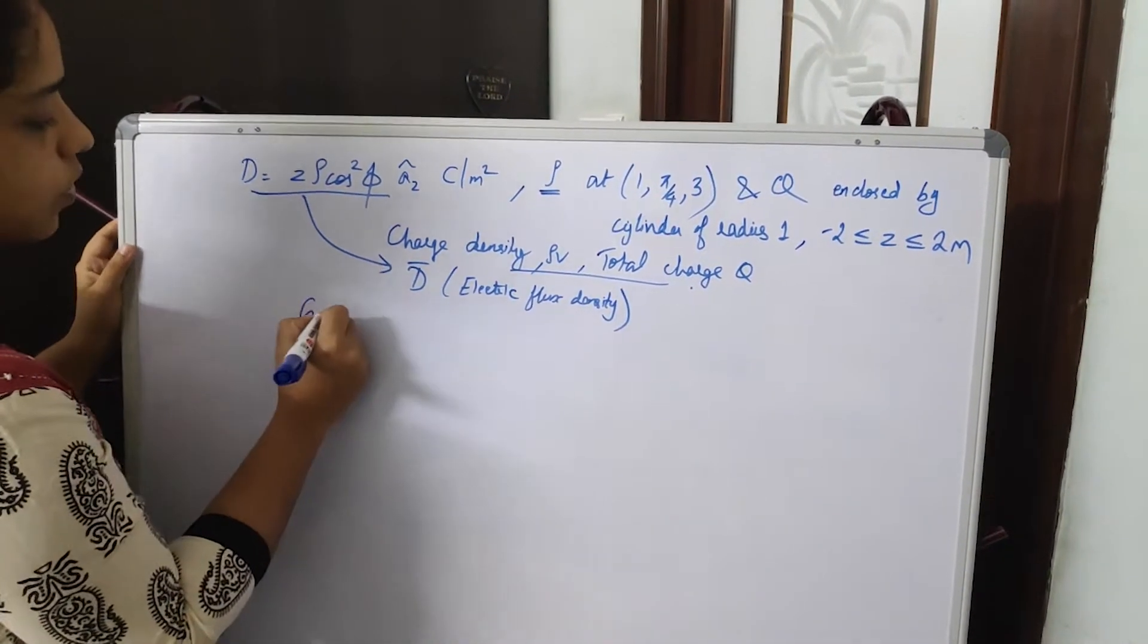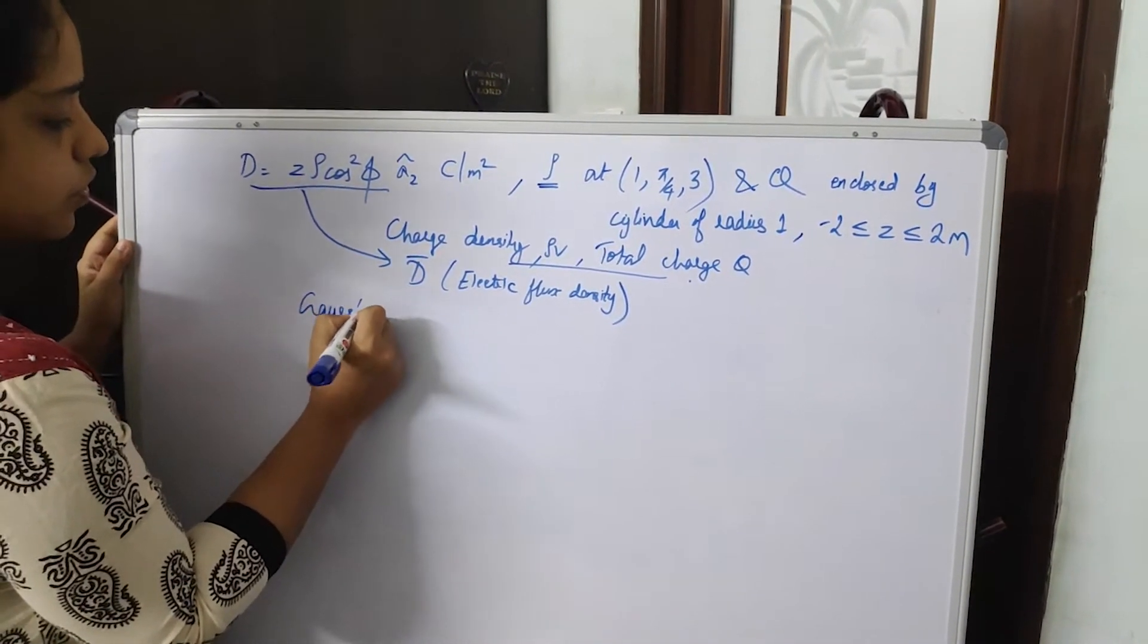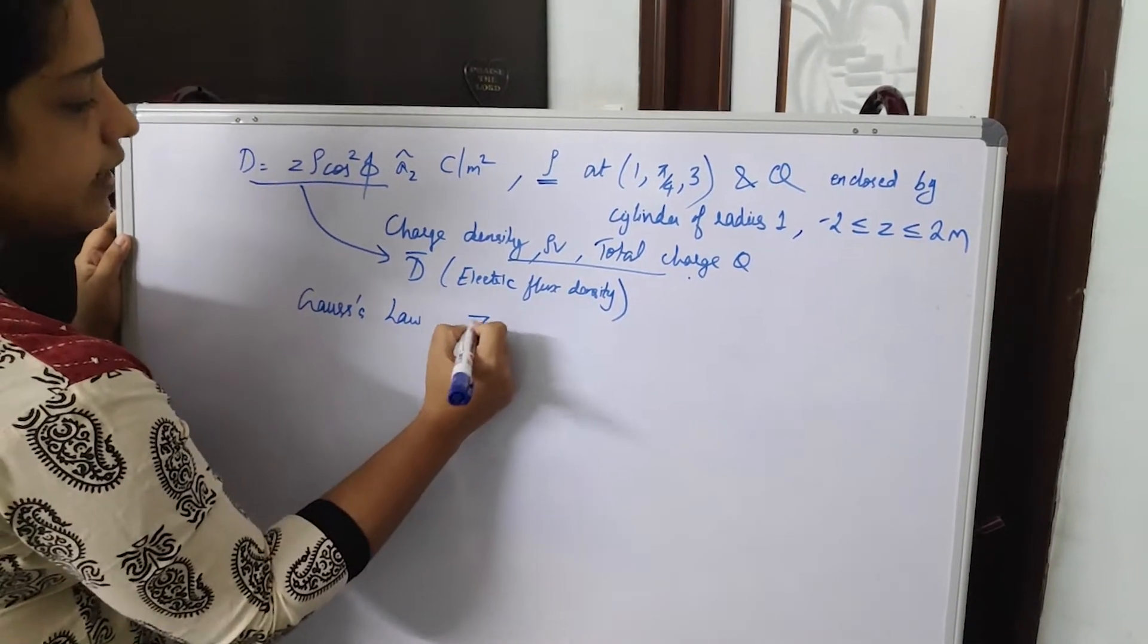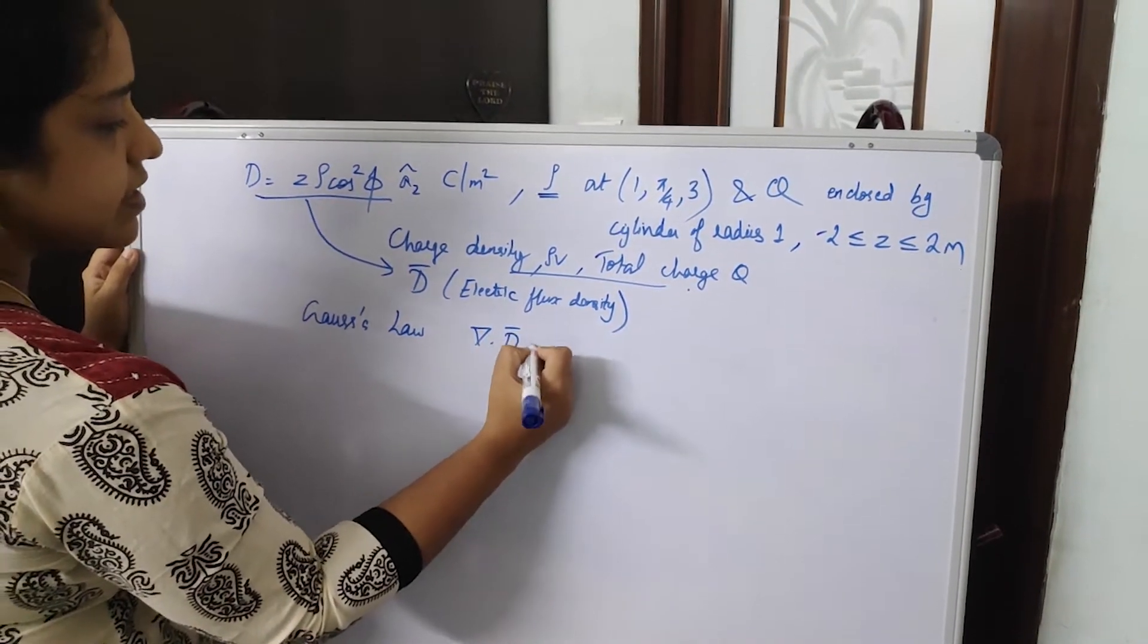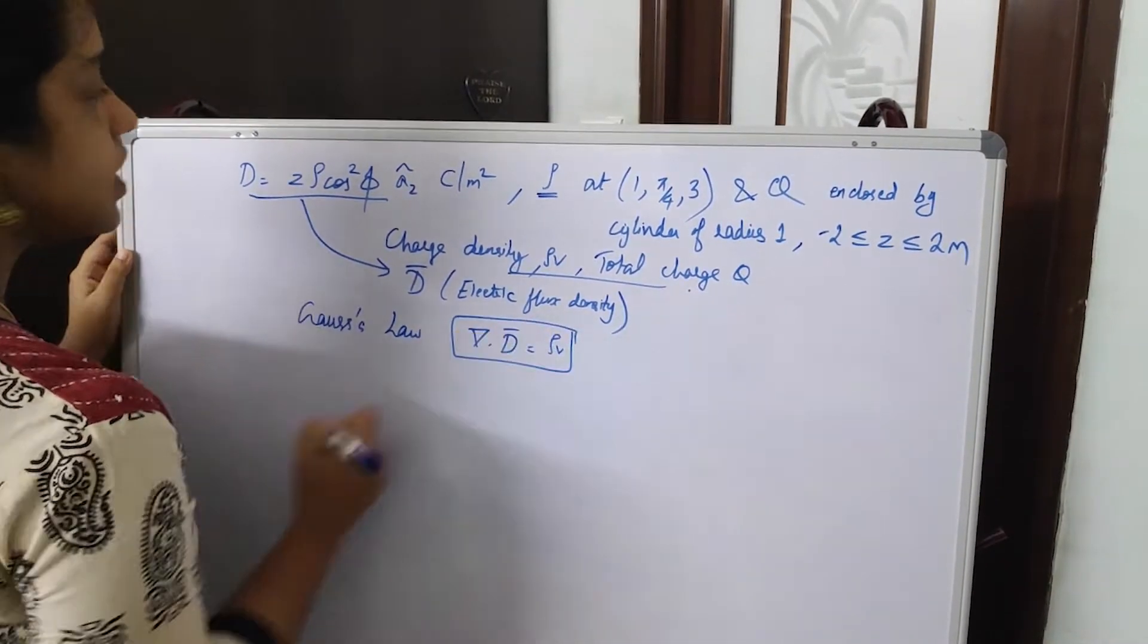That is Gauss's law, and according to Gauss's law, del dot D is equal to rho V.